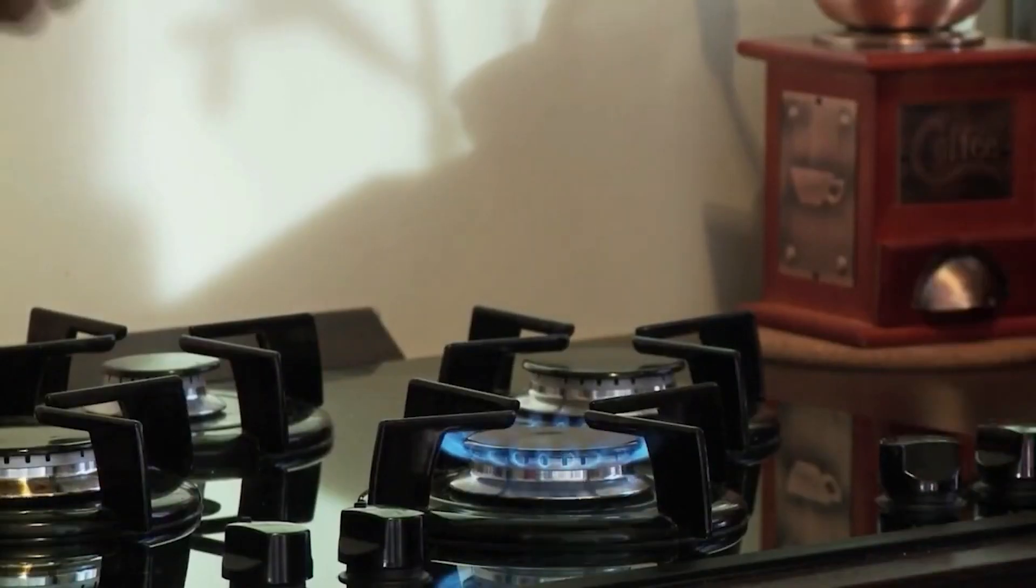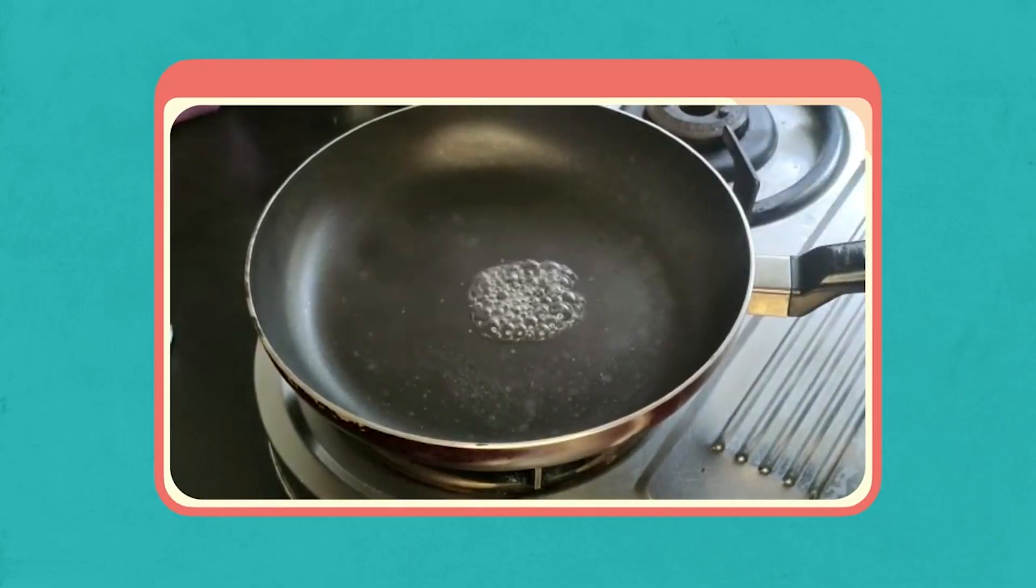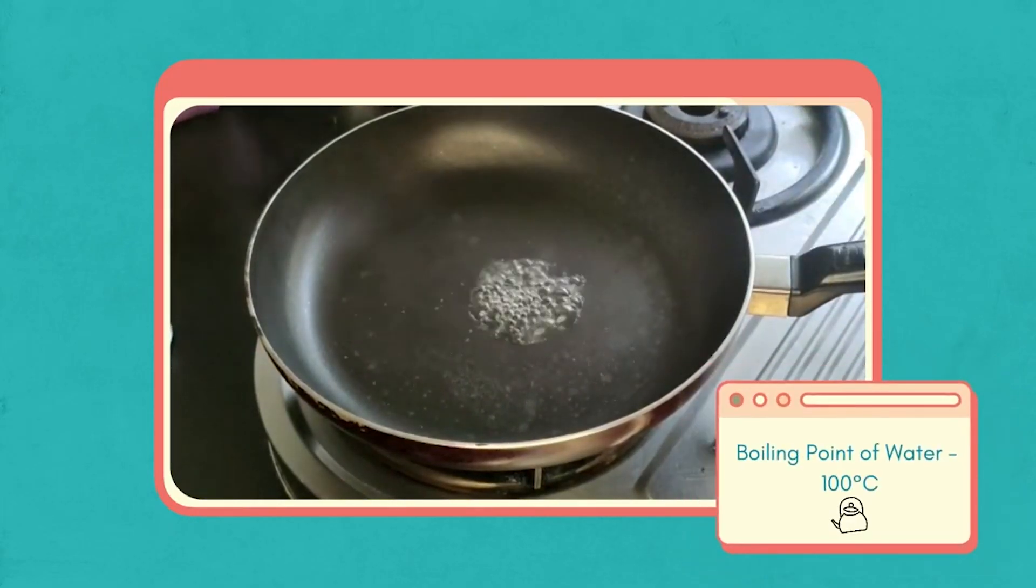Now let's heat a pan to make some pancakes. But is it the right time to pour the batter yet? To find out, sprinkle some water. If it starts evaporating immediately, it means that the temperature of the pan now is around 100 degrees Celsius, which is the boiling point of water. If we pour the pancake mix now, it will stick to the pan.